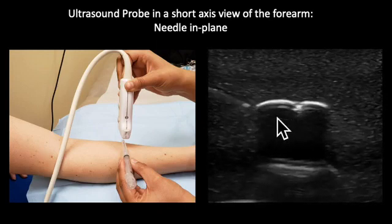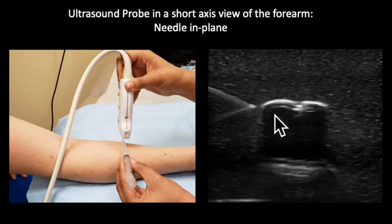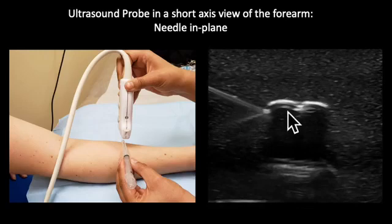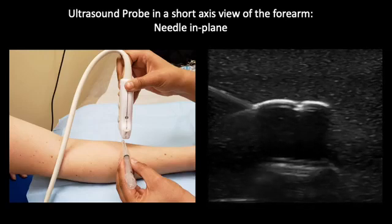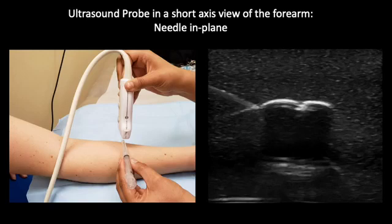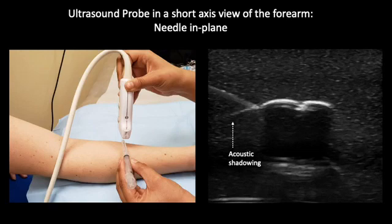Notice how the needle is going in and out of the vessel, taking careful note about how this appears on ultrasound. As opposed to using ultrasound to place an IV, when trying to do nerve blocks it is important to not puncture the nerve, but instead approach its border and inject analgesia around the edges of the nerve. You may also notice some acoustic shadowing from the needle in the in-plane technique — note that this is artifact from the ultrasound machine and not a part of the needle.